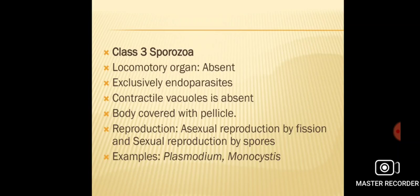The next class is Sporozoa. In Sporozoa, locomotory organs are absent, and all members belonging to Sporozoa are exclusively endoparasites. Hence locomotory organs are absent in the members of this class.